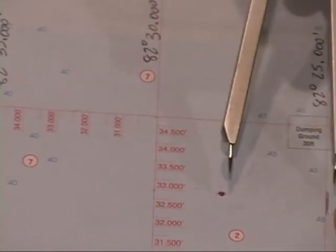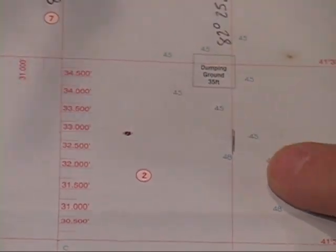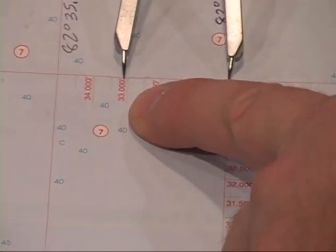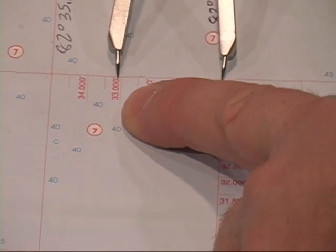So I've got my known point, my unknown point. I get that distance, I move that distance to my scale. And again, I'm at about 3.000, pretty good.